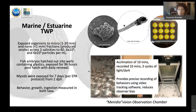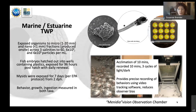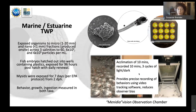Behavior is assessed with a Menidia vision observation chamber made by Noldus EthoVision, originally designed for larval zebrafish but now used across many types of aquatic organisms. Animals are acclimated for 10 minutes, then recorded for 10 minutes through three cycles of light and dark. This instrument provides precise behavioral recording using video tracking software, which reduces potential human error and makes measurements more consistent — rather than having someone manually clicking to count turns or direction changes.